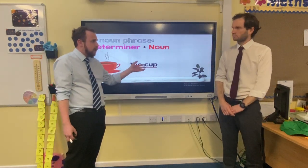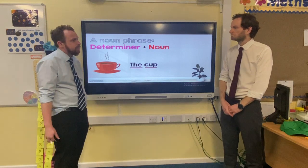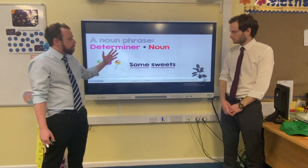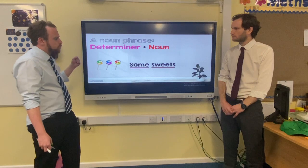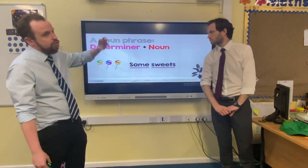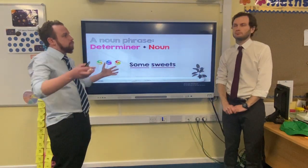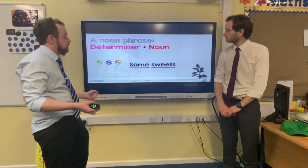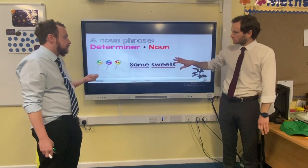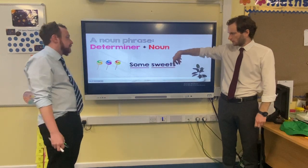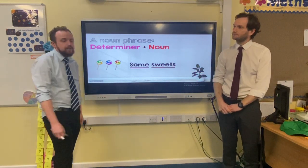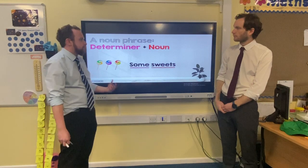Another example: 'some sweets'. What is the determiner? Well, 'some' — it introduces the noun and tells us there's more than one. And the noun is 'sweets' — that's the name of the thing in the sentence. So there we go: noun phrases are determiner and noun.